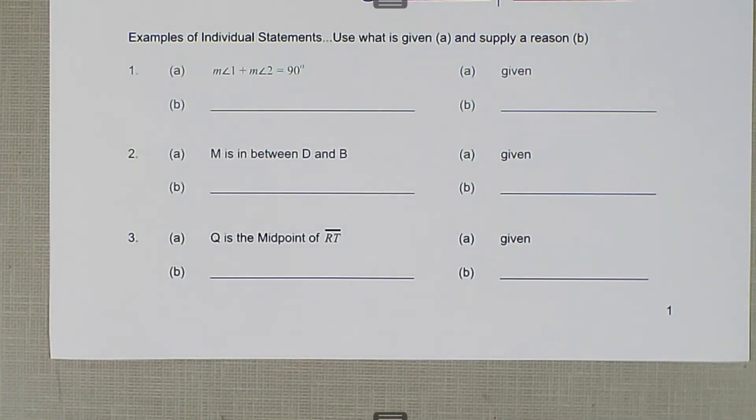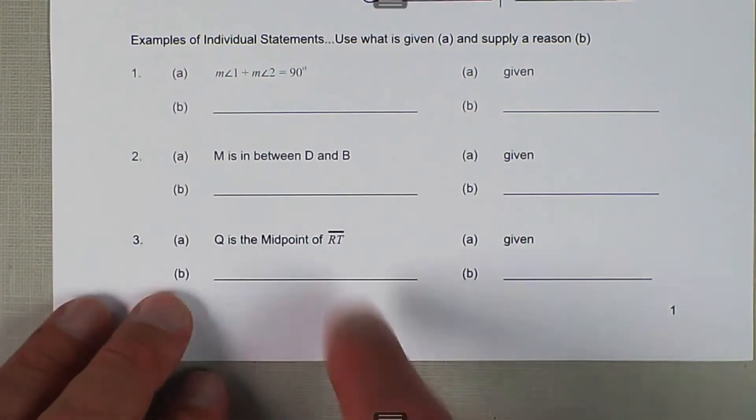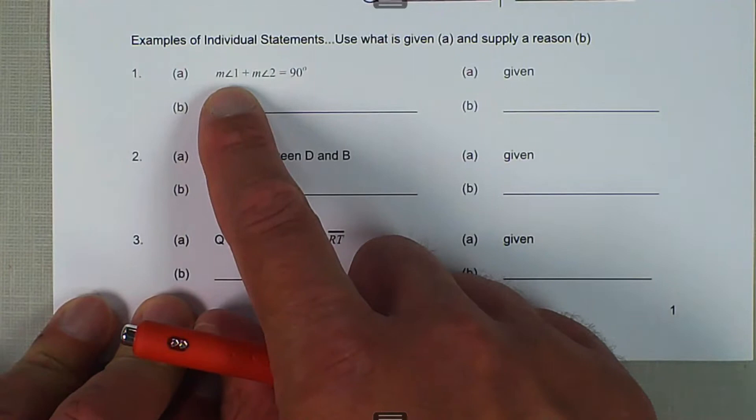We're talking about two-column proofs and here are some examples of individual statements you can make. Use what is given and then supply the reason. Information that's given: we have the measure of angle 1 plus the measure of angle 2 is equal to 90 degrees.